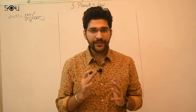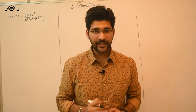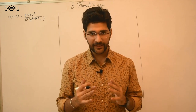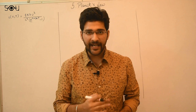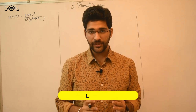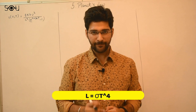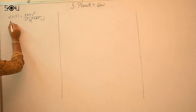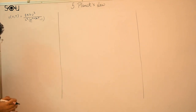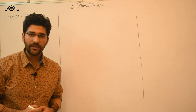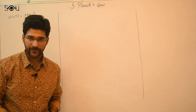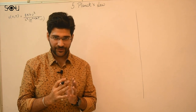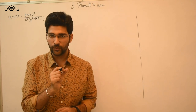Let us start with Stefan's law. Stefan's law states that the total energy emitted by a black body over the entire electromagnetic spectrum is proportional to the fourth power of the temperature of the black body. Using Planck's radiation law, to find the total luminosity of the black body, we will first calculate the energy output in a small frequency range dν.